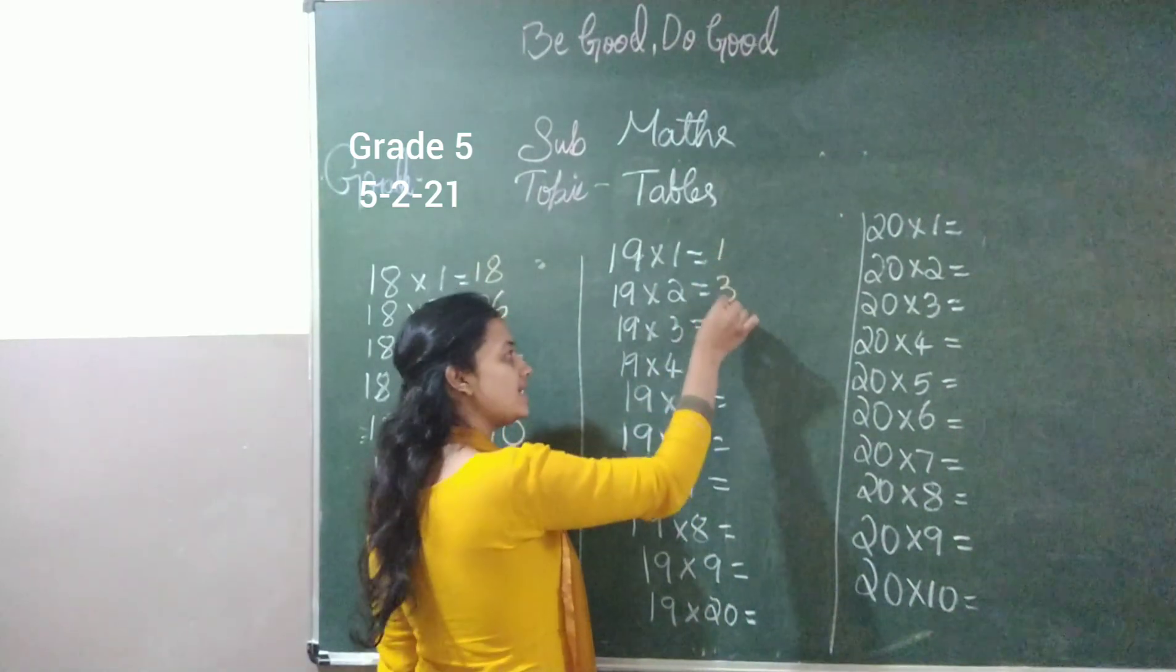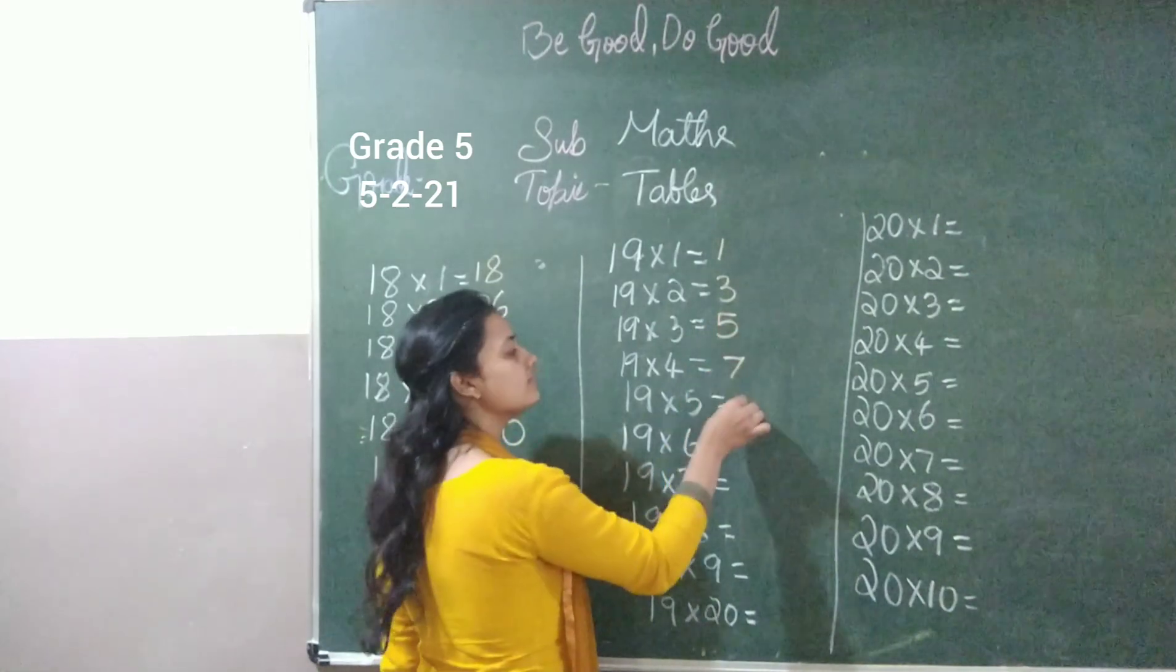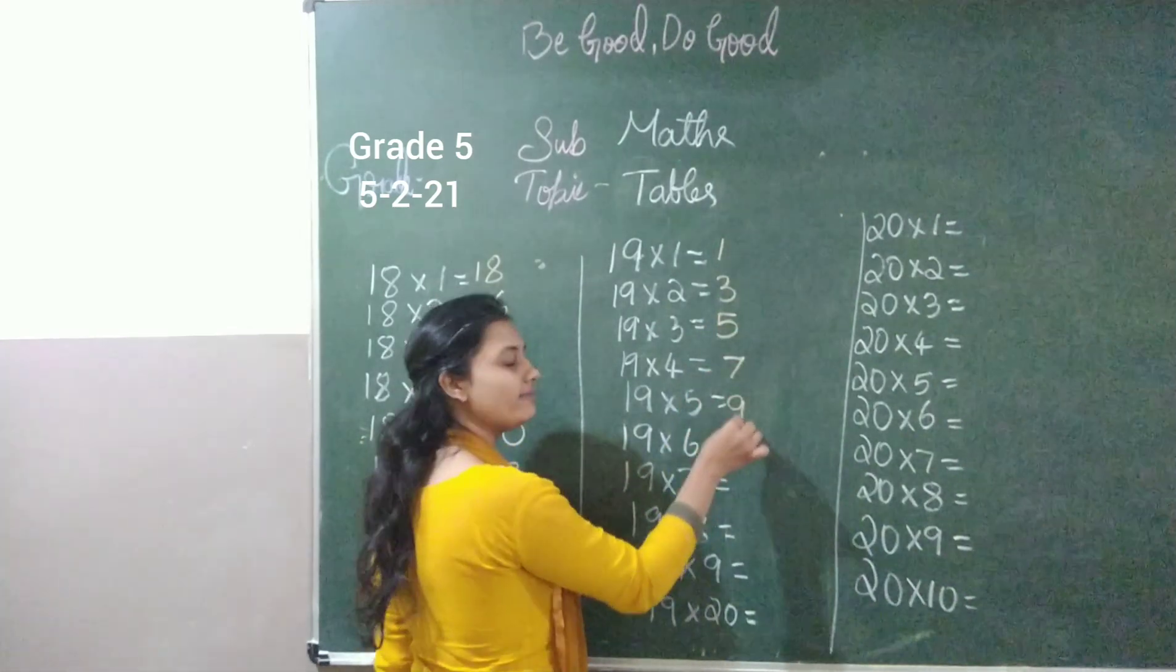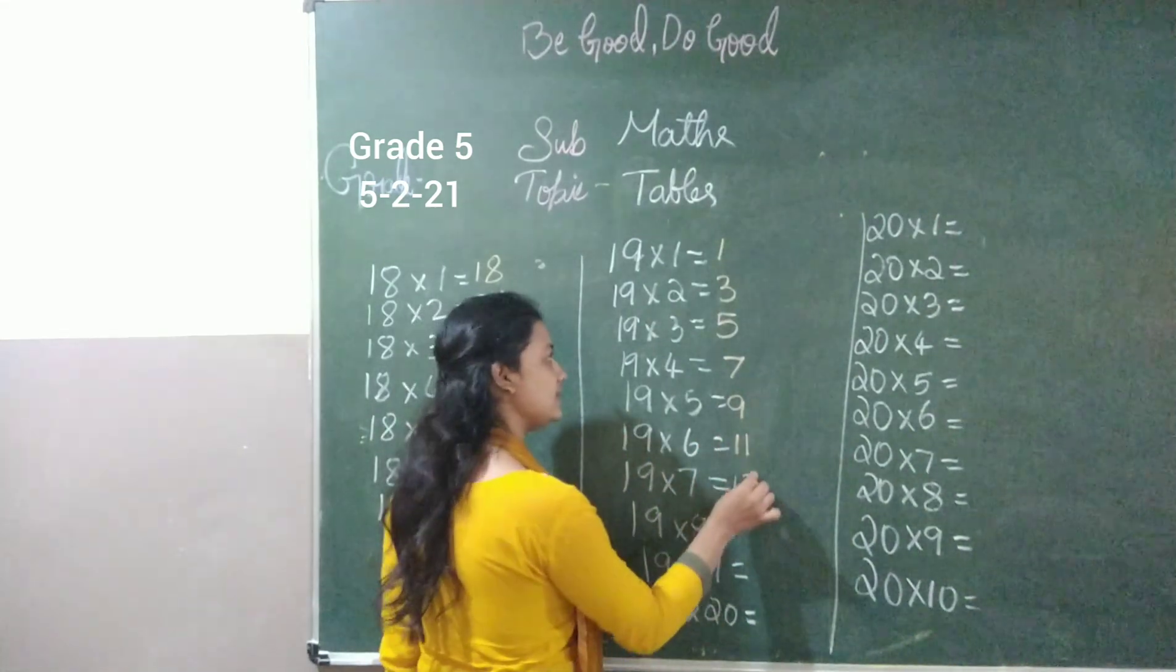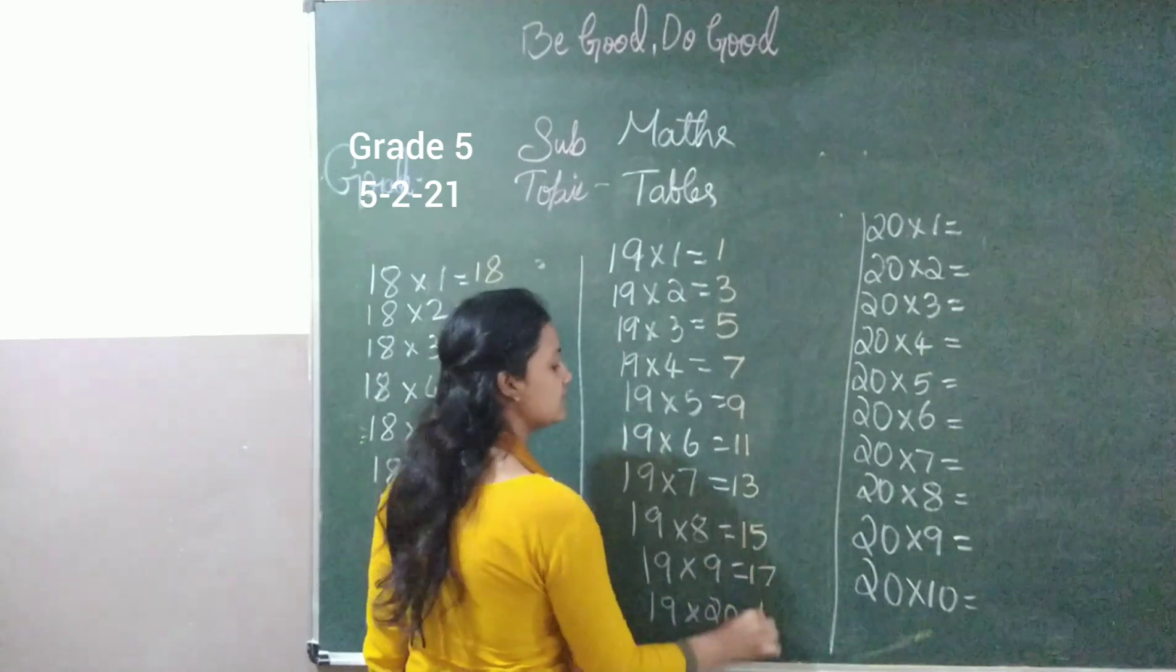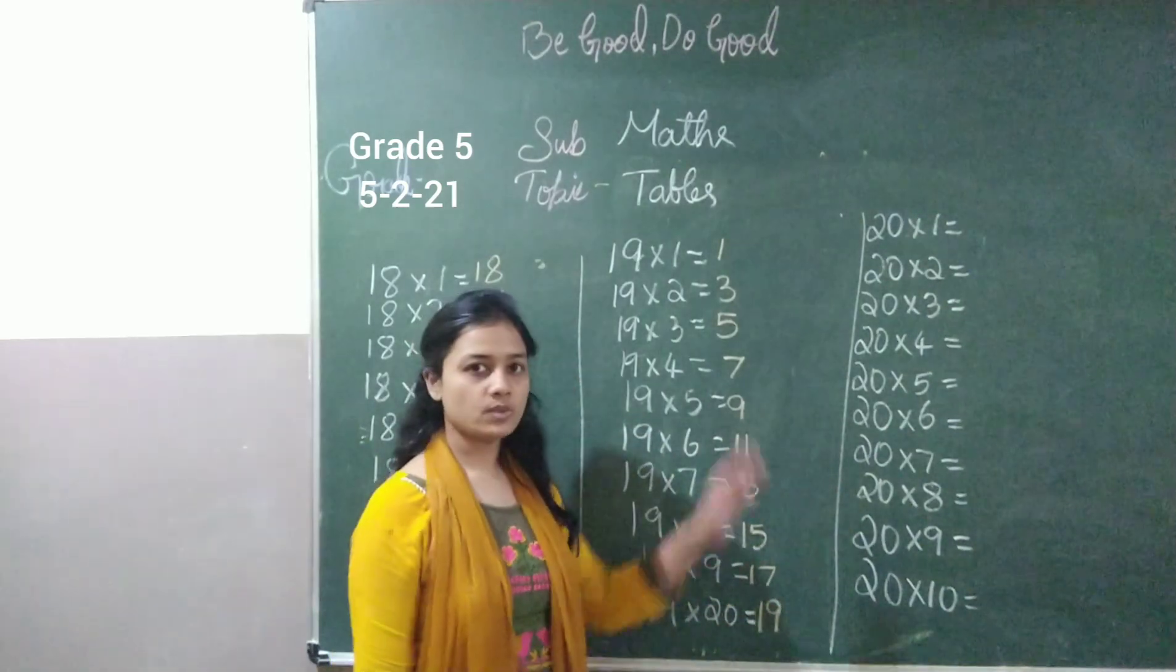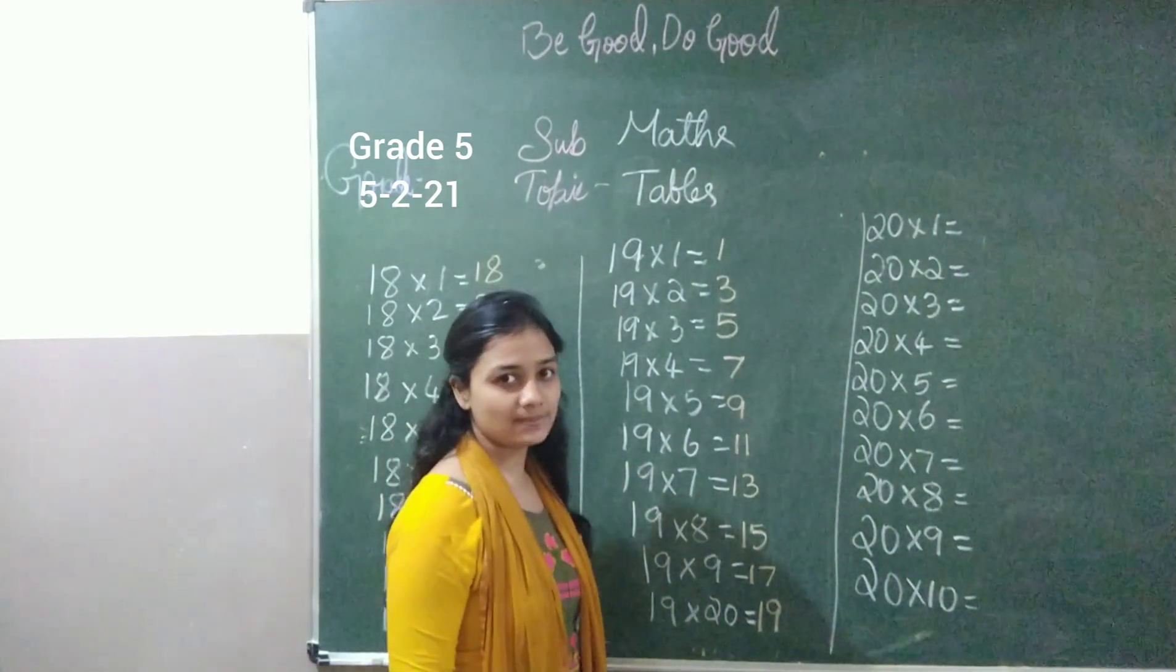1, 3, 5, 7, 9 and we'll continue to 11, 13, 15, 17 and 19. So we'll be doing the skip counting. Now how can we write the numbers for 9 tables?